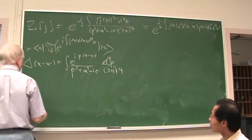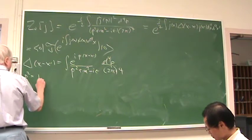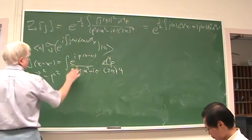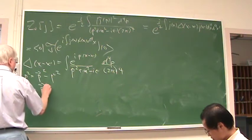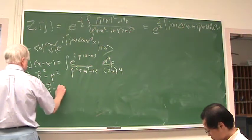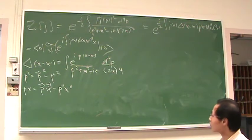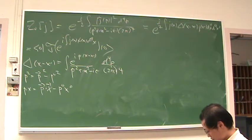In this notation p² = p-vector² − p_0² and p·x = p-vector·x-vector − p_0·x_0. Zee uses the opposite sign convention. Unfortunately, both conventions are equally common in the literature, which is really too bad. It would be nice if one of them had dominated.